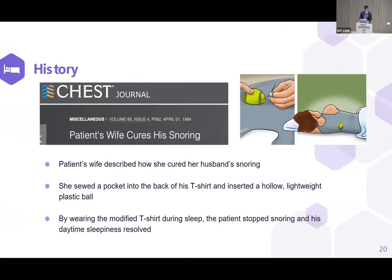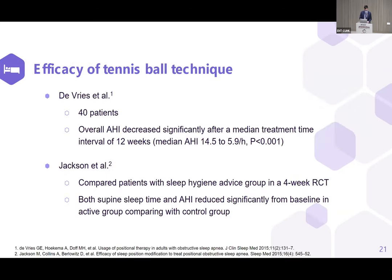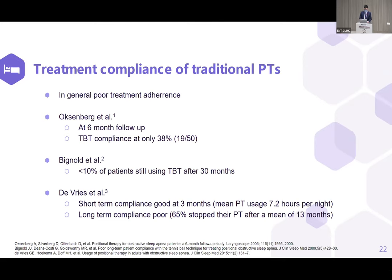Back in 1984, in the journal Chest, an author described sewing a pocket into the patient's T-shirt — this is the classic tennis ball technique. Whenever the patient assumes a supine position, the tennis ball at the back causes discomfort, and hopefully the patient will then assume a lateral position. The efficacy has been proven, with overall AHI dropping by 5.9, which is significant. However, compliance is poor due to discomfort — at six months follow-up, one study showed compliance of only 48%, and another showed it dropped to 10% after a few months.